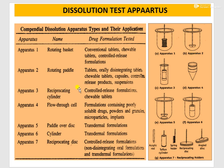Apparatus 3 is known as the reciprocating cylinder, useful for controlled release formulations and chewable tablets. Apparatus 4 is the flow-through cell, for formulations containing poorly soluble drugs, powders, granules, microparticles, and implants. Apparatus 5 is known as paddle over disc, useful for transdermal formulations. Apparatus 6 is also useful for transdermal formulations and uses a cylinder. Apparatus 7 is the reciprocating disc, useful for controlled release formulations, non-disintegrating oral formulations, and transdermal formulations.